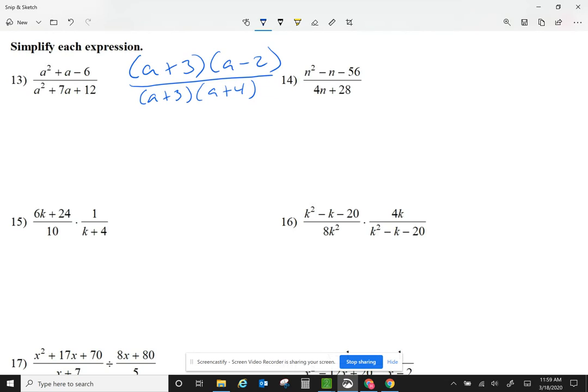Cancel any common factors. So I have a minus 2 over a plus 4. The way I will type this will be a minus 2 over a plus 4.